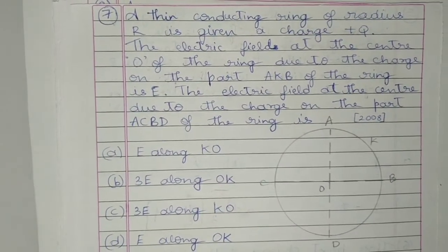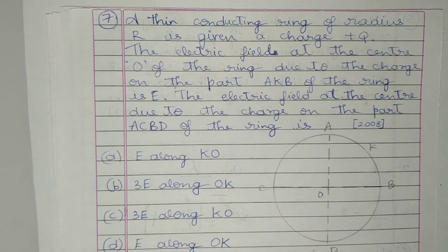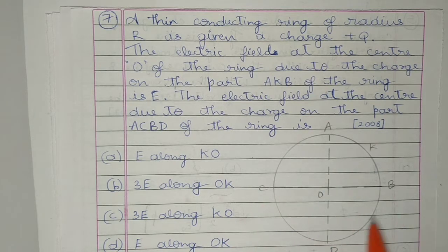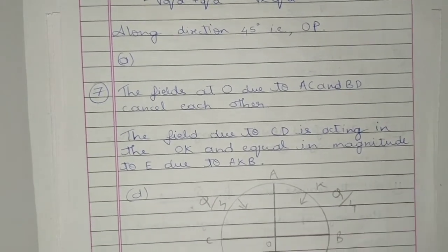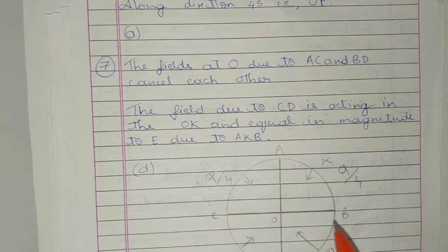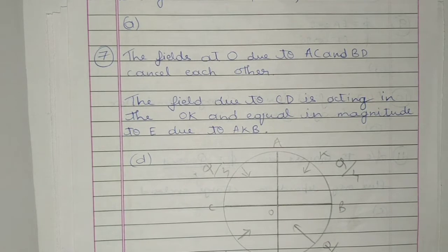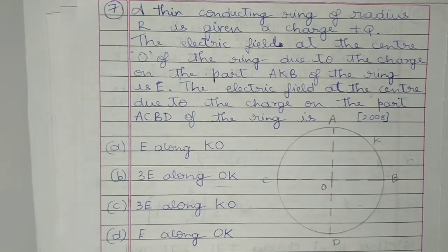Question 7: A thin conducting ring of radius R is given a charge +Q. The electric field at the center O of the ring due to the charge on the part AKB of the ring is E. The electric field at center O due to AC and BD cancel each other. The field due to CD acts towards OK, towards the center, and is equal in magnitude due to AKB. Therefore it is option D.